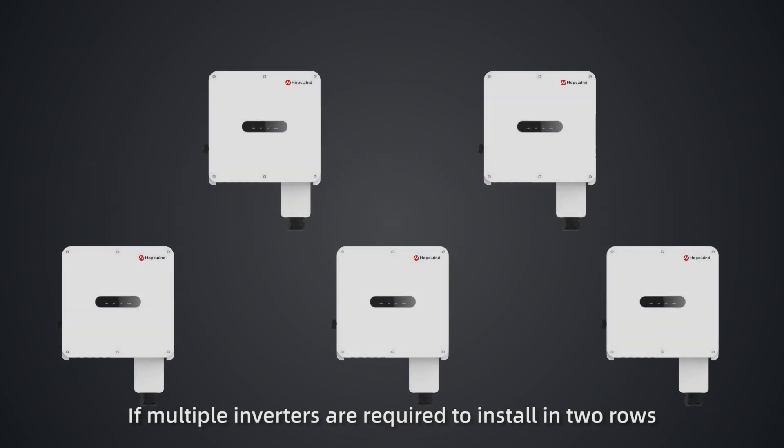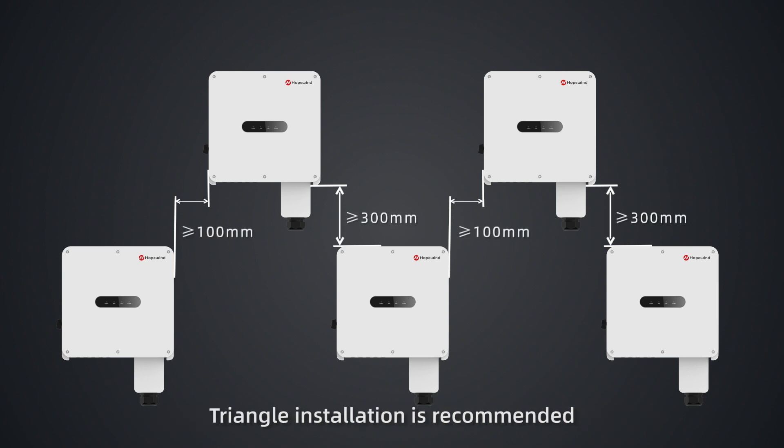If multiple inverters are required to install in two rows, triangle installation is recommended. More than 300mm space should be reserved between the two rows and more than 100mm space should be reserved on the left and right of the inverter.